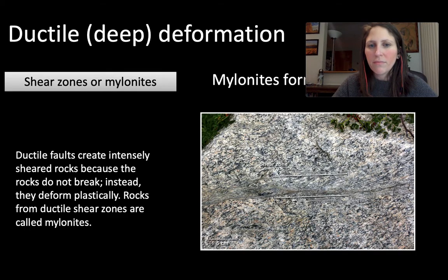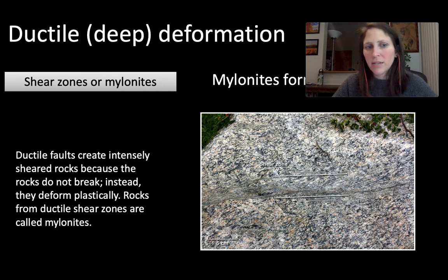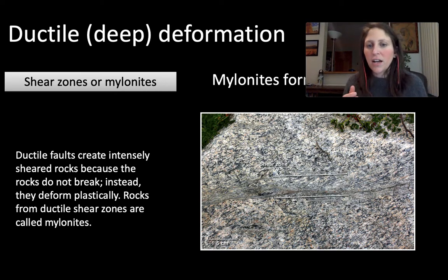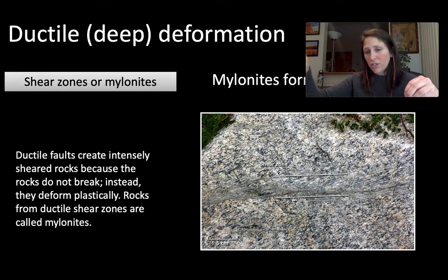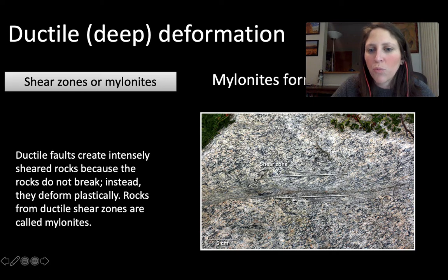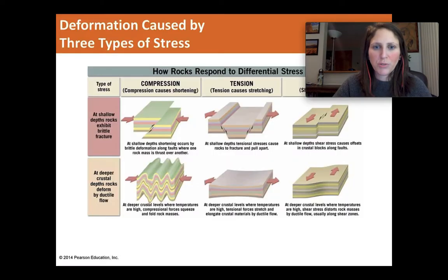That's what happens when you stretch ductally. The same type of ductile deformation from shear produces mylonites. Mylonites form in a ductile shear zone where the rock is being pulled apart in one direction and pushed in another — it gets this kind of wavy, smushy zone right in the middle of the ductile shear zone. There are some nice YouTube videos on that as well.